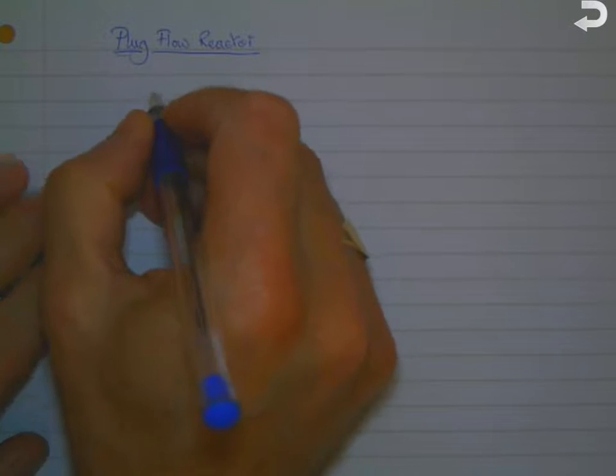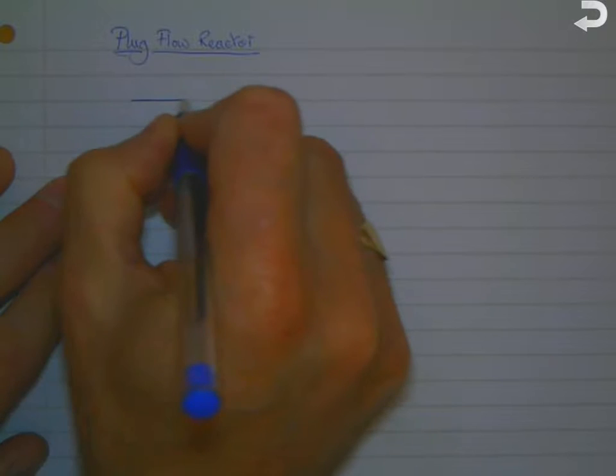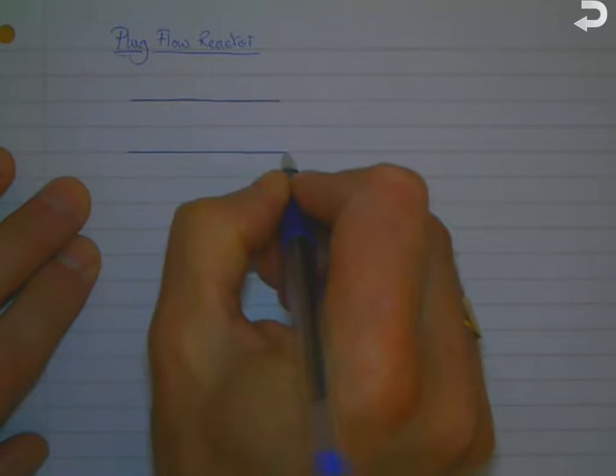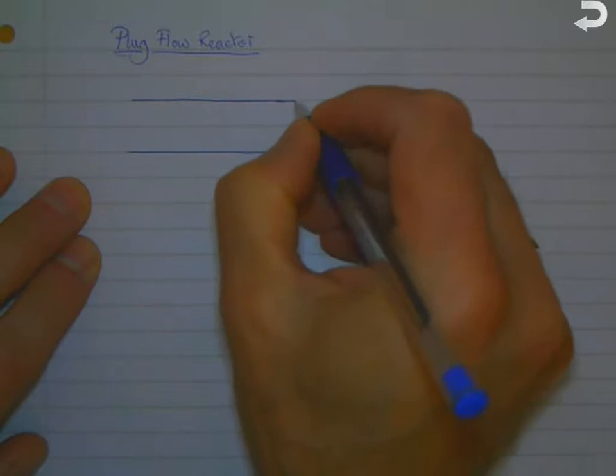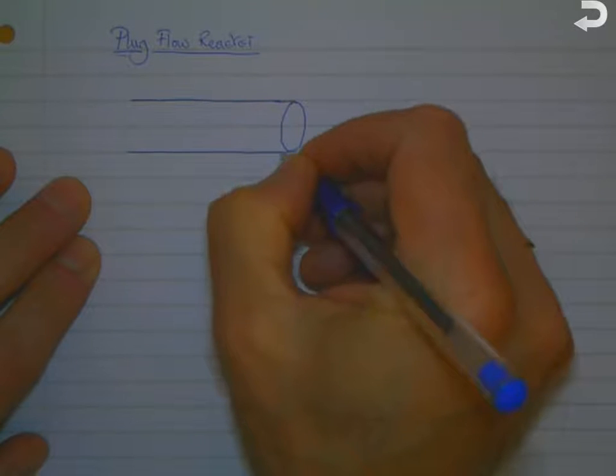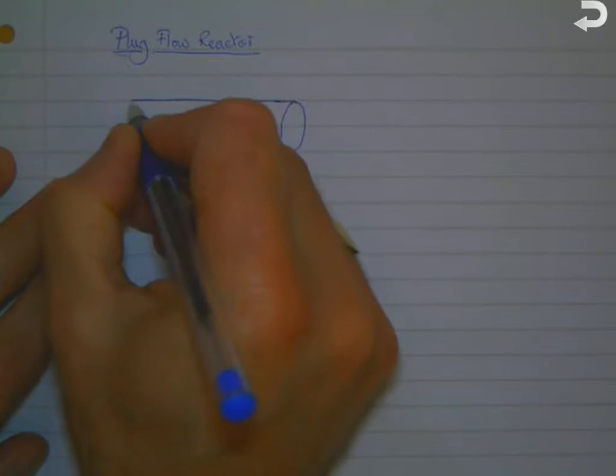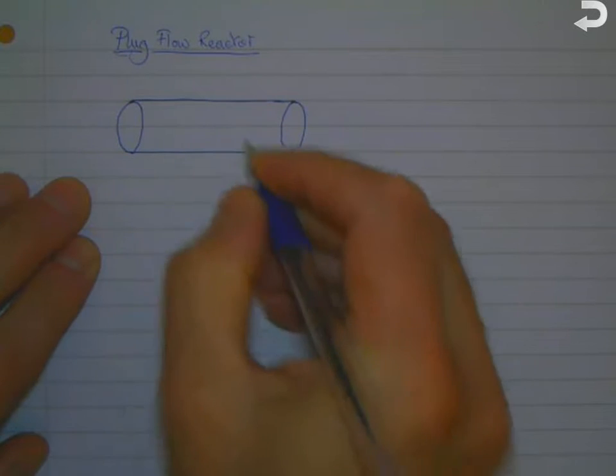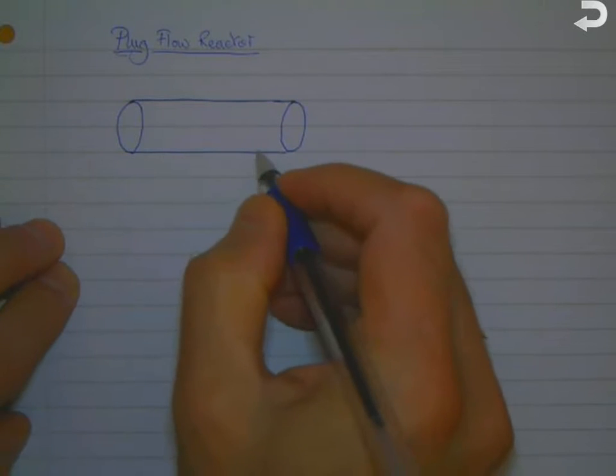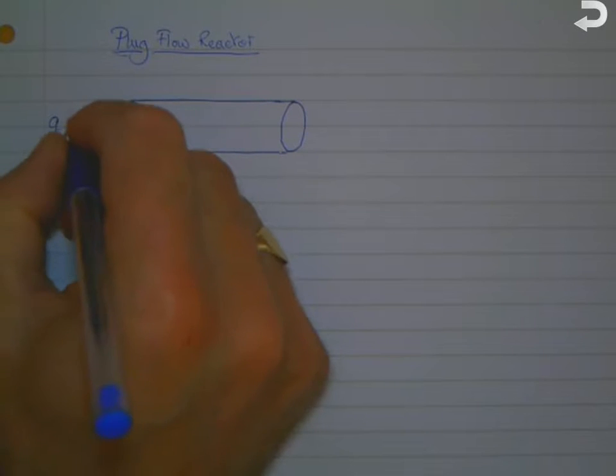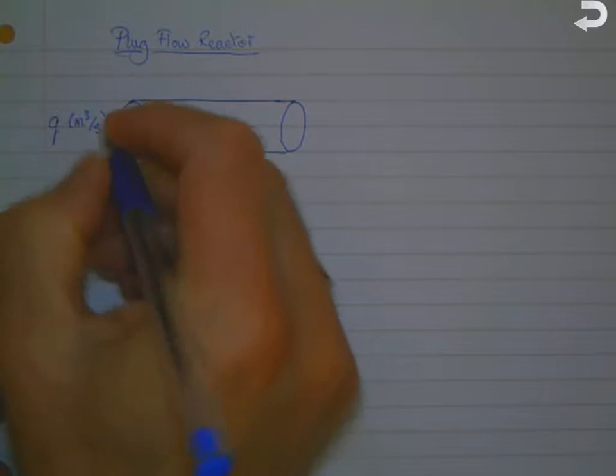Right, so what I'd like to do now is to derive the equations which describe a plug flow reactor. By plug flow reactor, we're talking about a tubular reactor, and it's actually a specific case of a tubular reactor. I'll explain that in a bit more detail shortly, but we've got flow along the tube here.